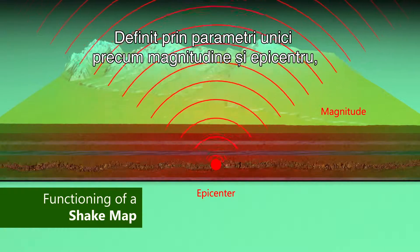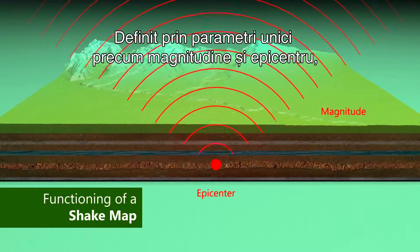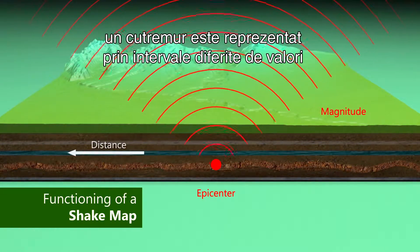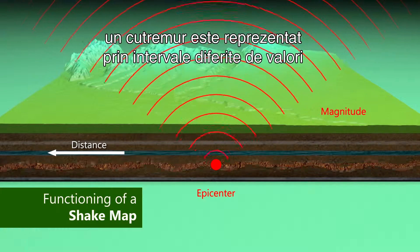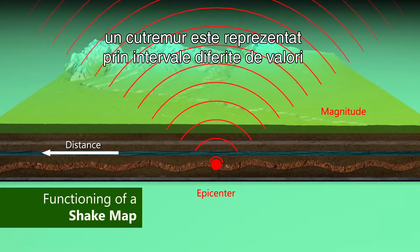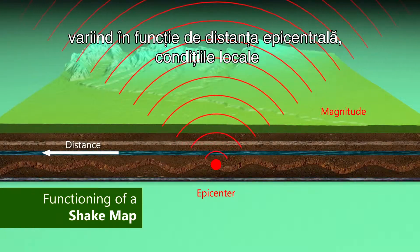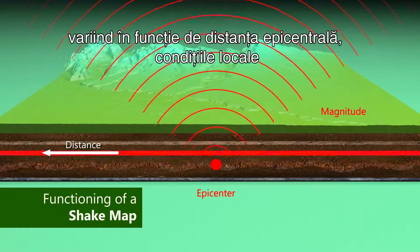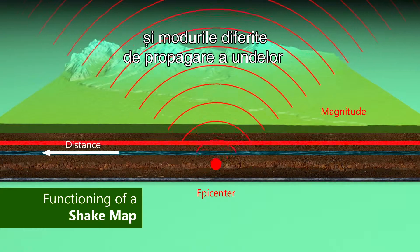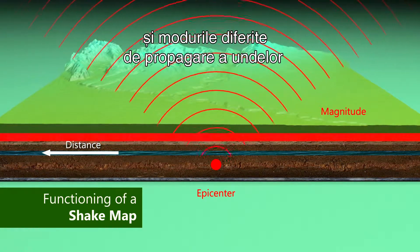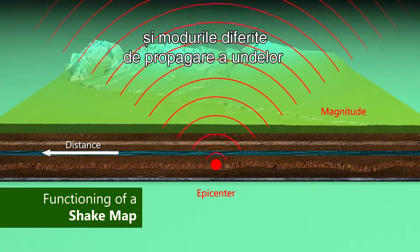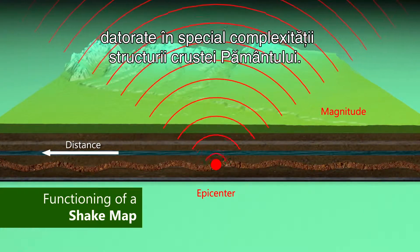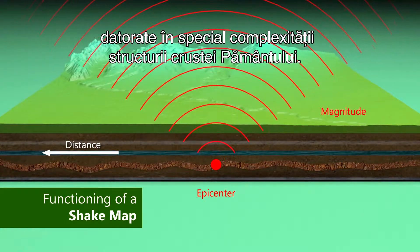While an earthquake has one magnitude and one epicenter, it produces a range of ground shaking levels at sites throughout the region, depending on the distance from the earthquake, the rock and soil conditions, and the variations in the propagation of seismic waves due to complexities in the structure of the Earth's crust.